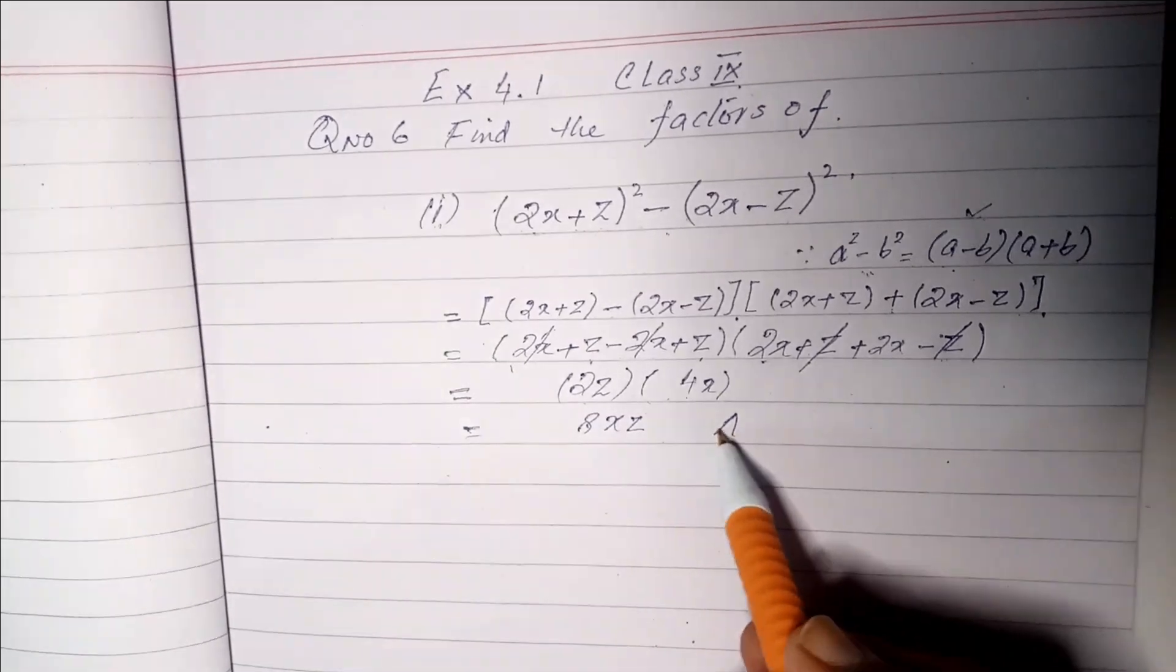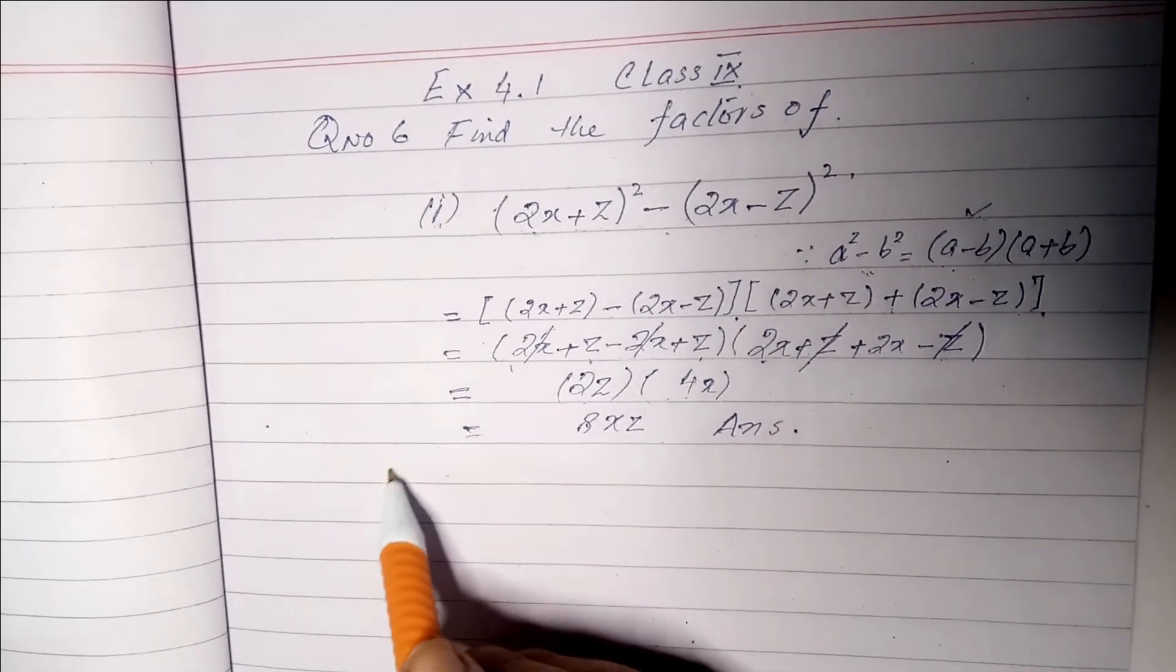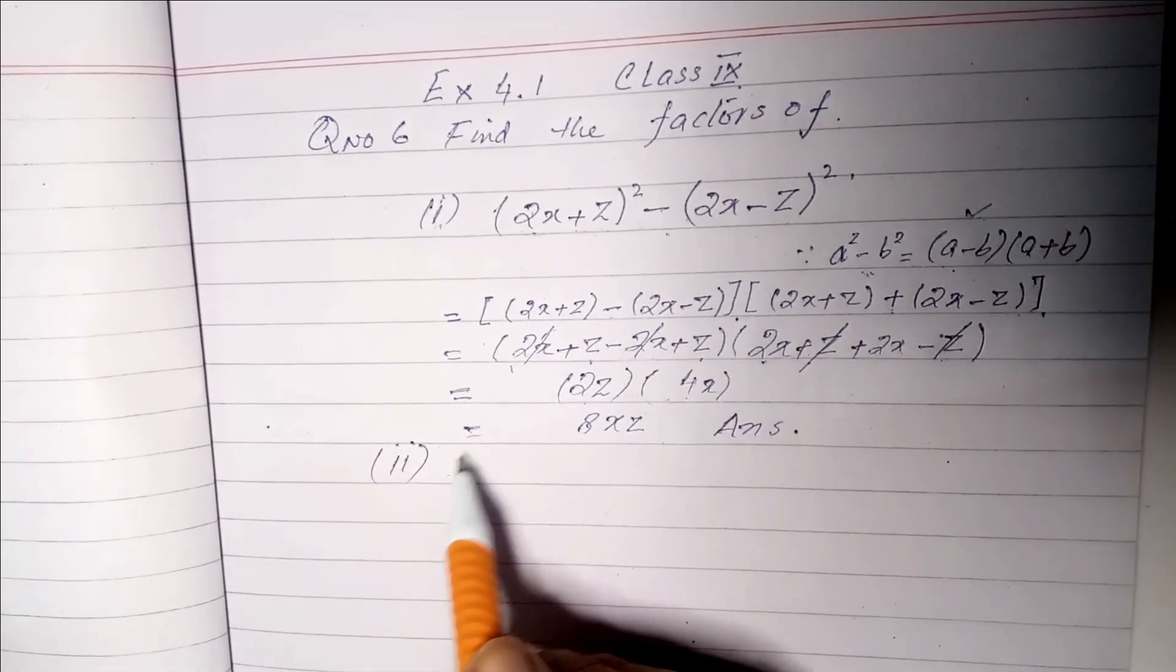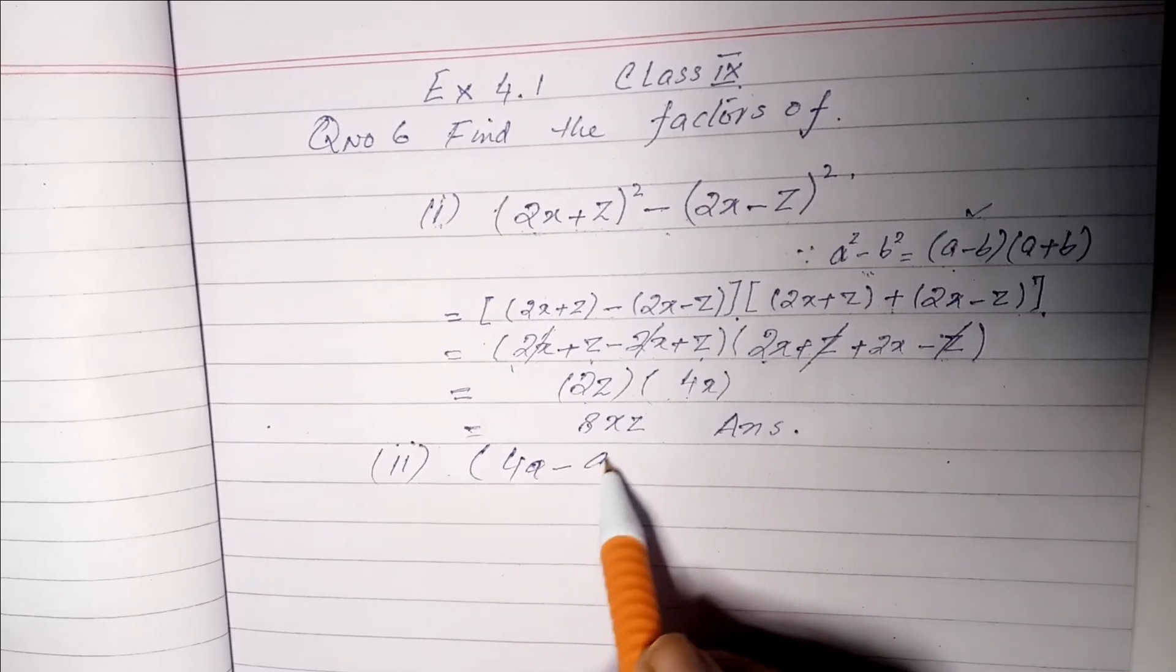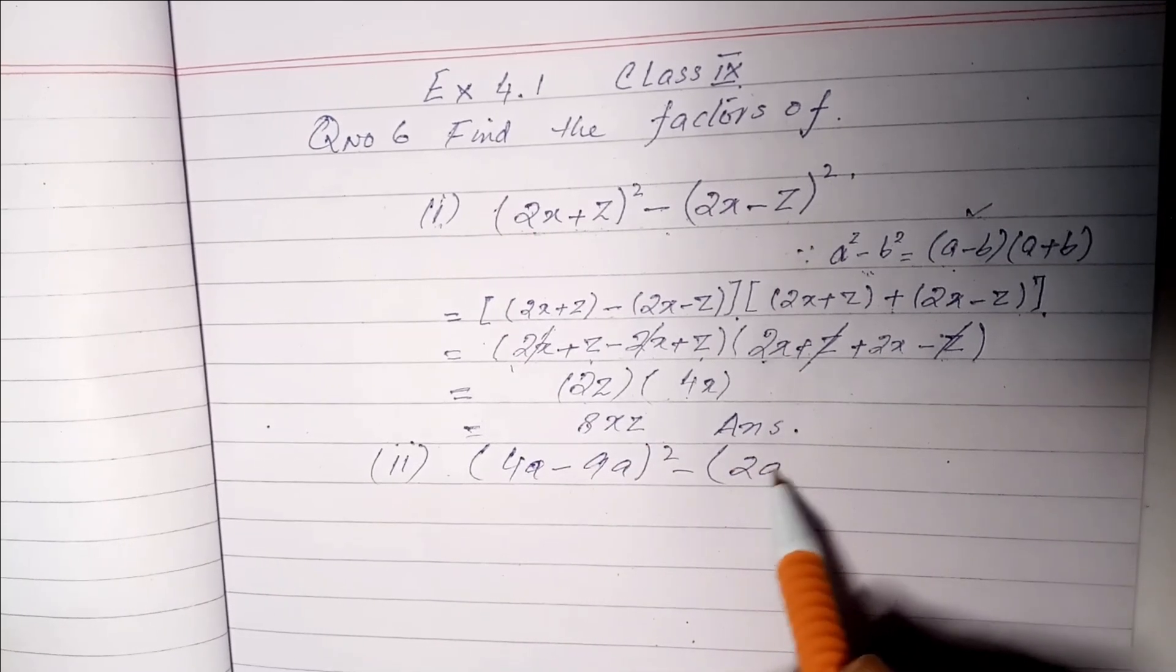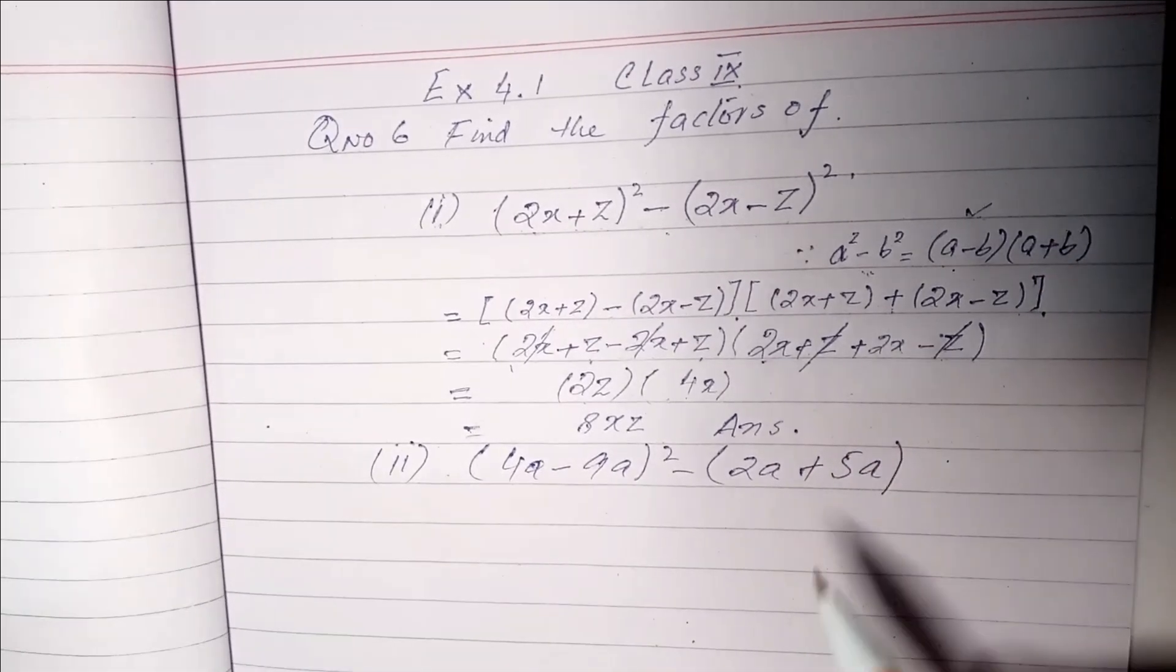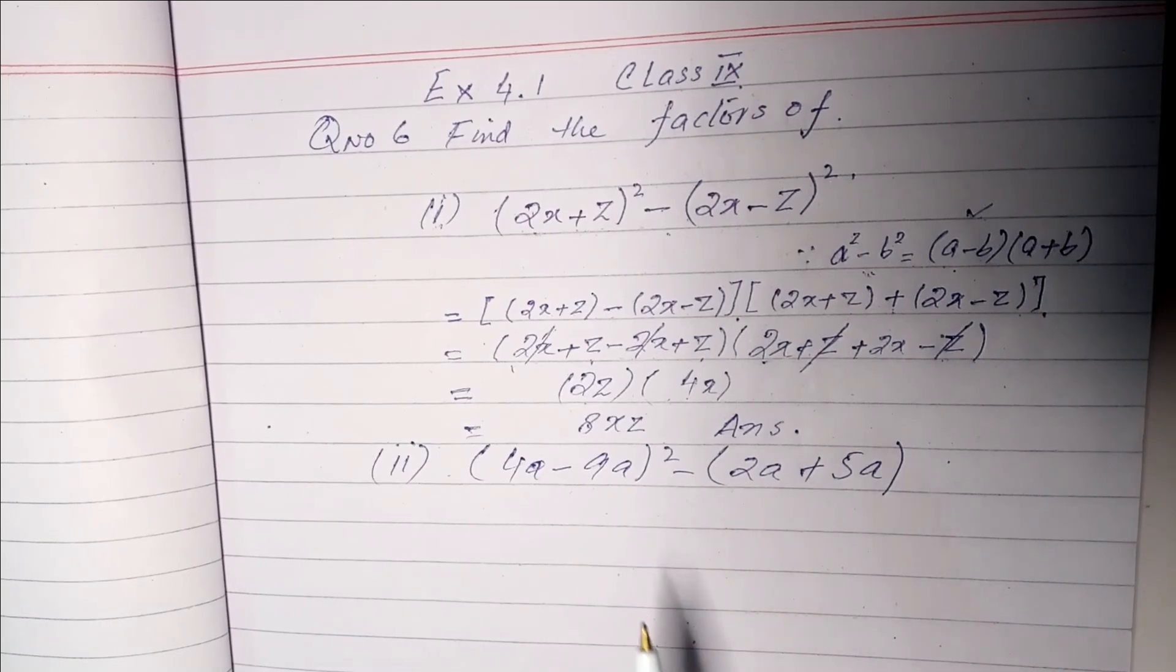So our question is complete. The second question you can solve yourself. The answer will be 4a-9a²-2a+5a. We will practice this well. In this way, the answer will come.